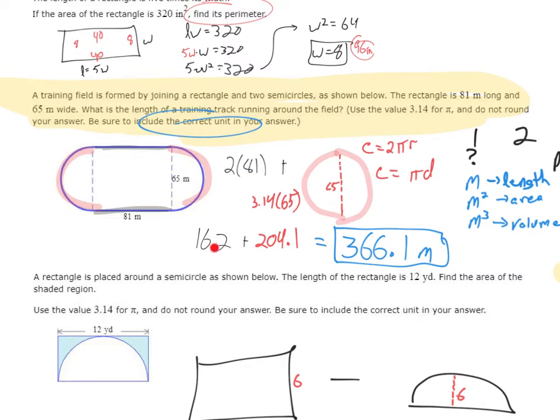So 2 times 81. That's where this 162 comes from. And then we have those two semicircles that combine to create a full circle. And I'm just trying to find the perimeter or circumference of that. There's two ways I could do it. 2 pi r, 2 times pi times radius, or pi times diameter. Well, for this one, since I know the diameter is 65, I'm going to go ahead and use pi times diameter. And that's where I get this 204.1 value. So to find the overall perimeter, I'm just going to add the red segments to the black segments, and we'll call it a day.